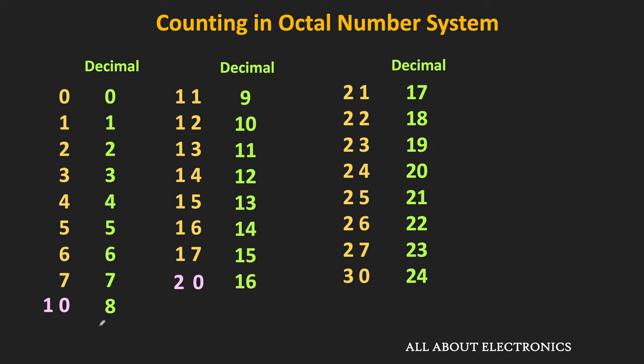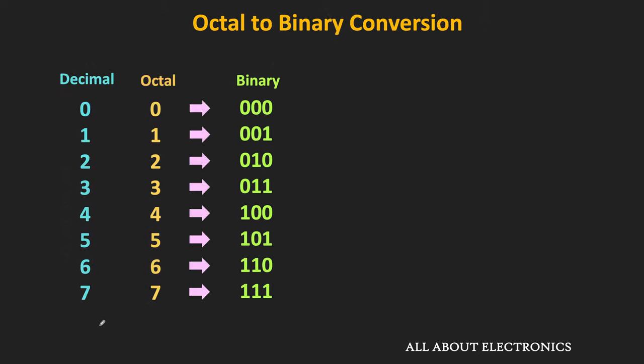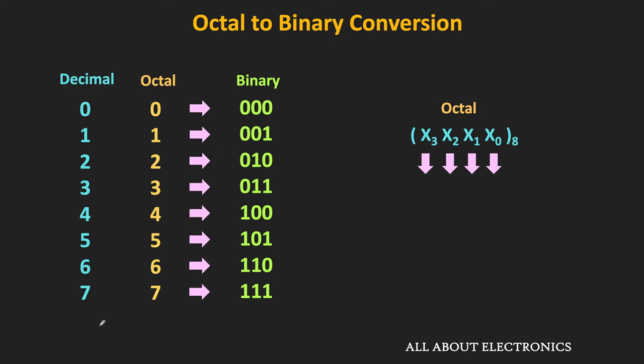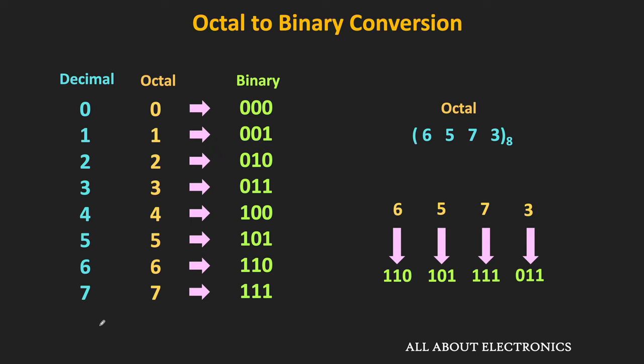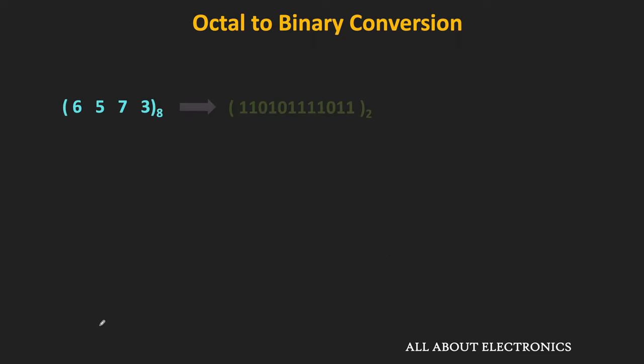To convert an octal number into binary, we replace each octal digit by the corresponding 3-bit binary number. For example, for the octal number 6573: the binary equivalent of 6 is 110, 5 is 101, 7 is 111, and 3 is 011. Grouping all these binary numbers together gives the full binary equivalent of the given octal number.